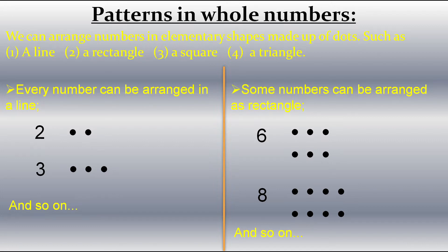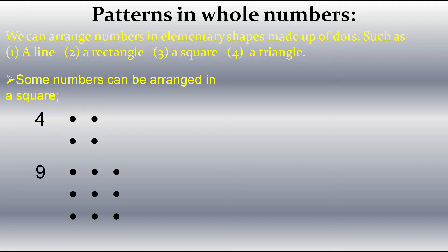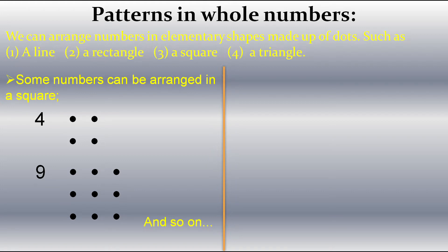Next, we have to think about squares. Some numbers can be arranged in the shape of a square. For example, four dots can be arranged in a shape of square. Same way, nine dots can be arranged in a shape of square and so on. These numbers — the numbers which can be arranged in a shape of square — are called square numbers.